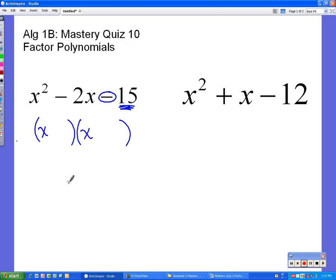We always set up two sets and we always put an x in each. When we have a minus at the end, the signs will be different where they go. That depends. So we have to figure out what our numbers are before we can figure out what our signs are going to be.